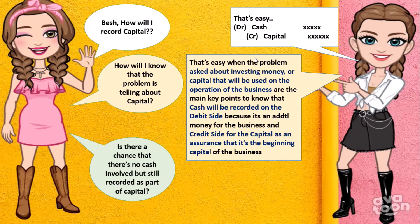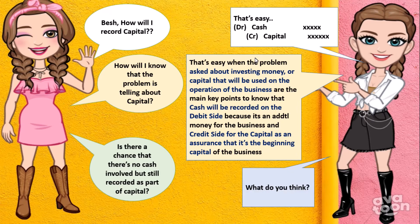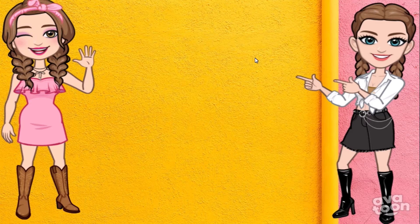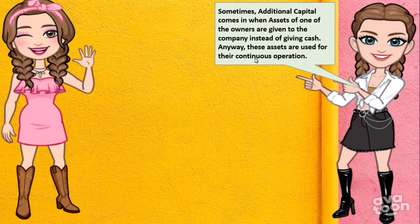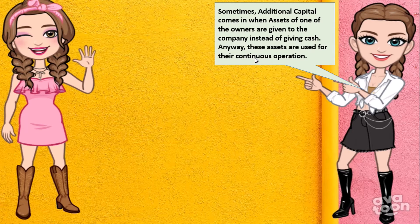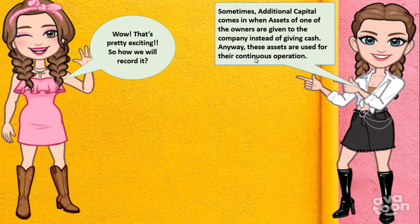Is there a chance that there is no cash involved but it is still recorded as part of capital? The answer is yes! Sometimes, additional capital comes in when assets of one of the owners are given to the company instead of actual cash. These assets are used for their continuous operation.